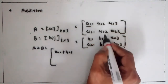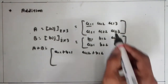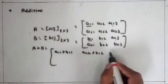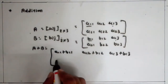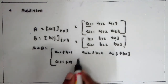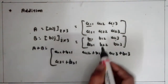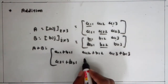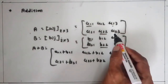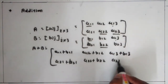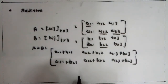Similarly, second entry with second entry: a12 plus b12. Third entry with third entry: a13 plus b13. Then for the second row: a21 plus b21, a22 plus b22, and a23 plus b23. So this becomes the addition of the given two matrices.